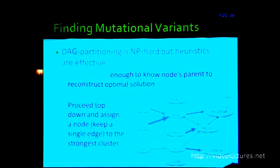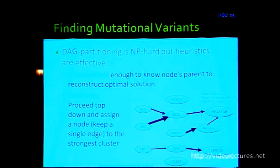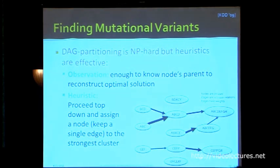The key observation enabling heuristics is that it's enough to know each node's parent to reconstruct the optimal solution. The heuristic starts at the top and proceeds in topological order of the DAG; at every step nodes are asked where they most likely evolved from, also including the size of the cluster and the parent the node belongs to. This way we extract trees approximating inclusion relationships, giving us different mutational variants of the same piece of content — without any human supervision.